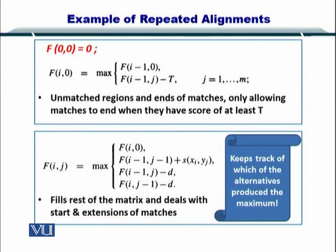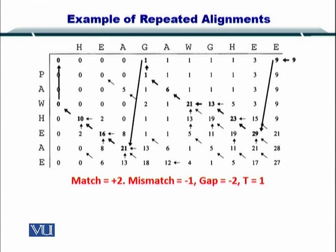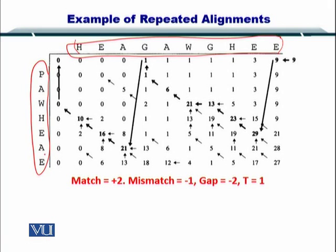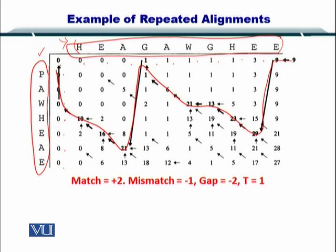So what happens if we apply this recurrence relationship? Here is an example with two sequences. You want to search for the repeated occurrence of one sequence within the other. You have filled up all the positions in the alignment matrix as you can see here, and then you have done some traceback. As you can see, the traceback is very unusual in this case.